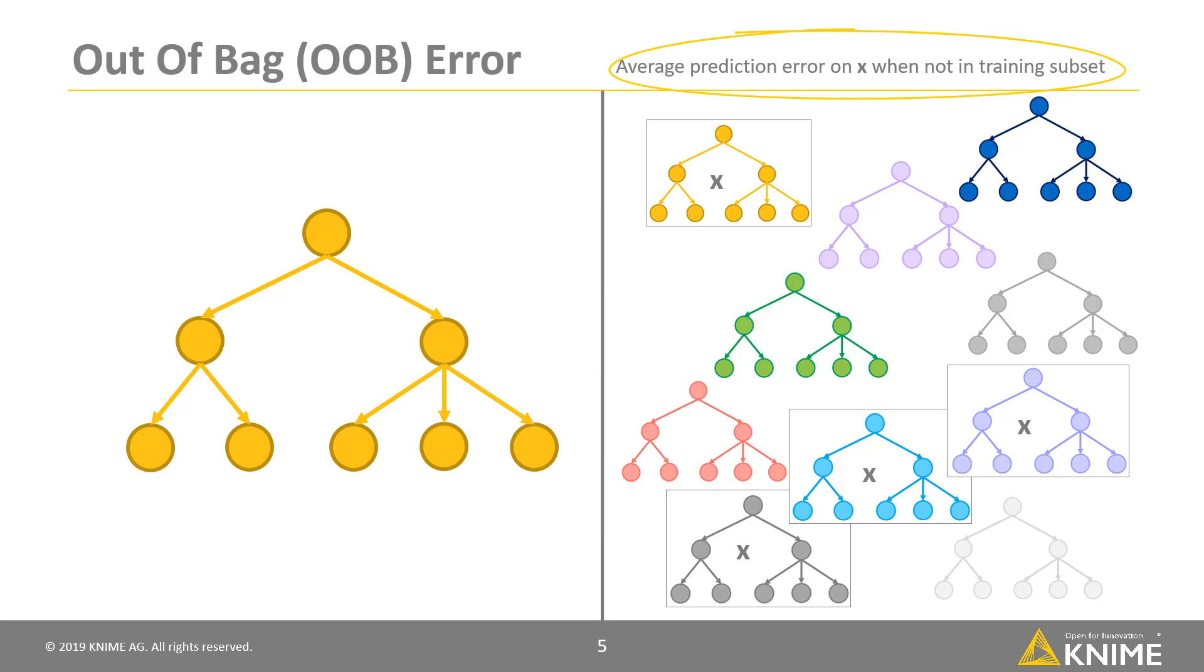Out-of-bag estimates avoid the need for an independent validation data set, but might underestimate actual performance improvement.